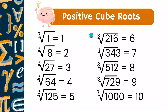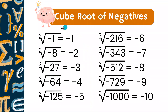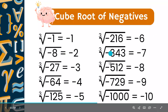Let's look at the positive cube root chart — I put this first because these numbers are a lot harder. 1 cubed is 1, 2 cubed is 8, 3 cubed is 27, and so on. You can jot this down in your notebook. Now let's look at cube roots of negatives. A negative number times a positive number is a negative number, so negative 1 times negative 1 is positive 1, but positive 1 times negative 1 is negative 1 — which is why we can have a negative number inside a cube root.